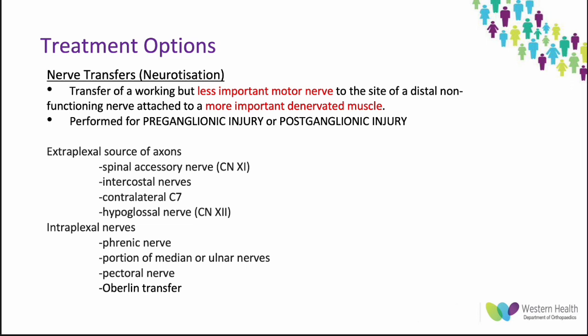Nerve transfer involves transfer of a working but less important motor nerve to the site of a distal non-functioning nerve attached to a more important denervated muscle. It is performed for both preganglionic and postganglionic injuries. There are two sources of donor axons: extraplexal and intraplexal. Extraplexal sources include the spinal accessory nerve, intercostal nerves, contralateral C7 root, and hypoglossal nerve. Intraplexal sources include the phrenic nerve, a portion of the median or ulnar nerves, and the pectoral nerve. The most commonly utilized are the extraplexal spinal accessory nerve and intercostal nerves. The intraplexal use of a partial ulnar nerve transfer inserted into the biceps muscle is commonly performed and is called the Oberlin transfer — I would highly suggest going through this to become more familiar with it.